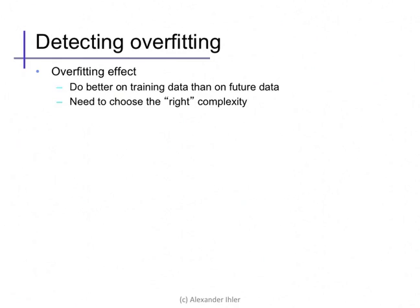High variance is exactly the overfitting effect. We do better on the data that we see than we will on future data, alternative samples. To balance these effects we need to choose the right model complexity.